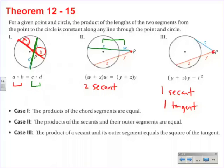If we find the product of that entire length, W plus X, and multiply it by the outer segment, which is just W, you'll see that right here. It will be equal to, if we do that for our second secant segment there, Y plus Z is the entire segment, and if we find the product with that and the outer piece, which is just Y, you'll see that it is equal.